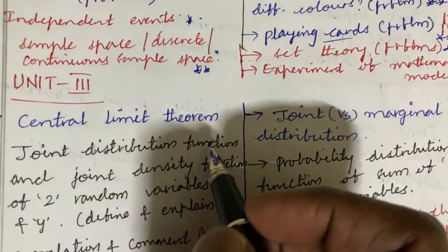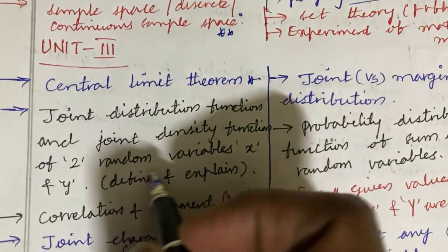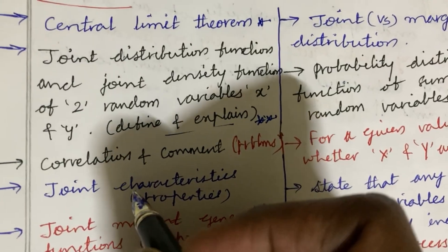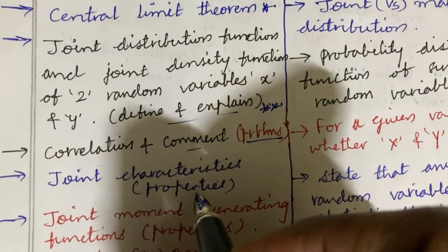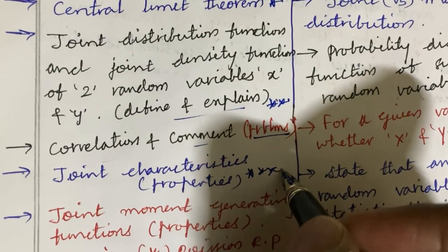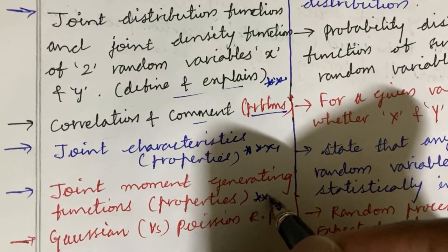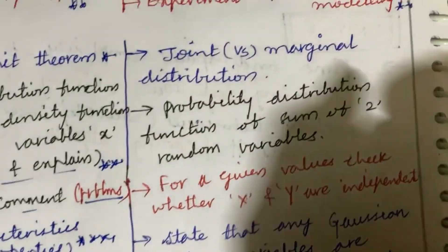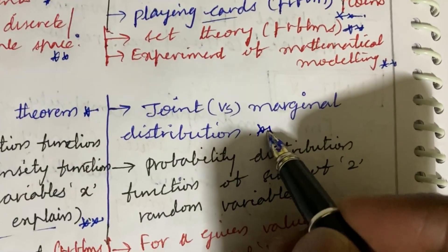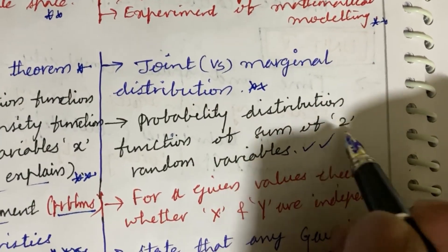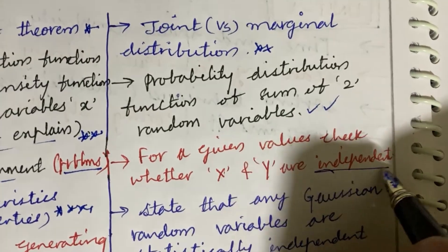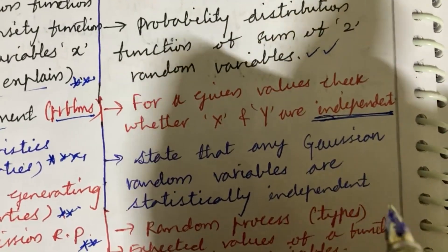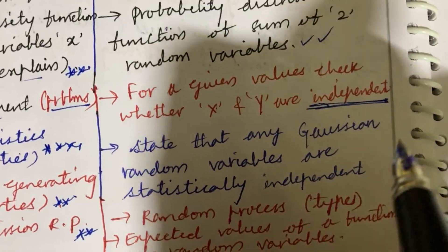Moving to Unit 3: Define the central limit theorem, explain and prove it. Joint distribution function and joint density function of two random variables X and Y — define and explain — such questions are damn sure in the question paper. Define correlation and the related problems. Joint characteristics and joint characteristic properties are a short question. Joint moment generating functions along with properties may be a five-mark question. Poisson random process is also said to be a gunshot question. Joint versus marginal distribution and their differences, and probability distribution function of sum of two random variables, are top most questions.